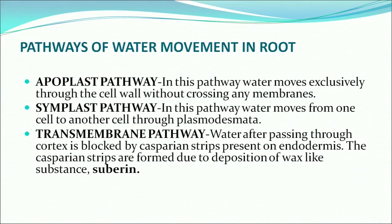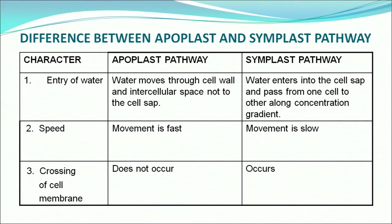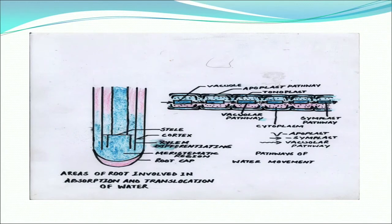The Casparian strips are formed due to deposition of a wax-like substance called suberin. In the apoplast pathway, water moves through the cell wall and intercellular spaces without entering the cell cytoplasm. In the symplast pathway, water enters the cytoplasm and passes from one cell to another along the concentration gradient. The speed of the apoplast pathway is faster than the symplast pathway. Crossing of the cell membrane does not occur in the apoplast pathway, whereas it does in the symplast pathway.